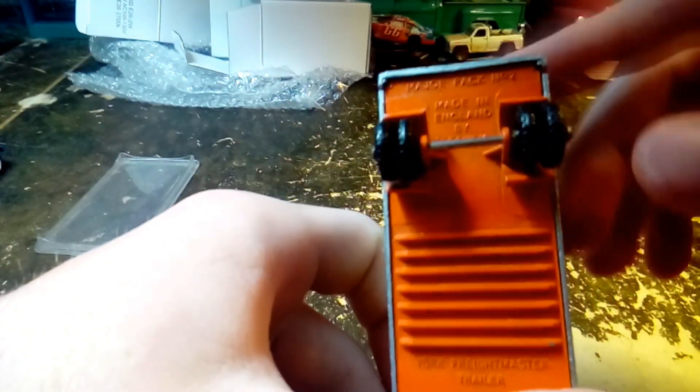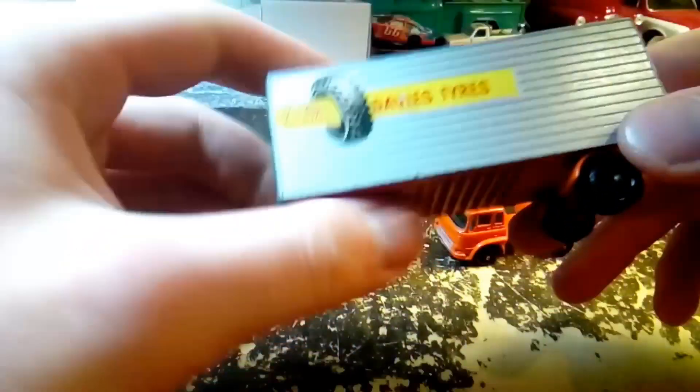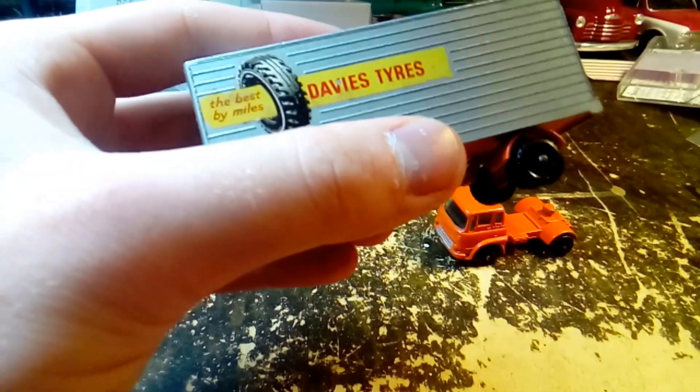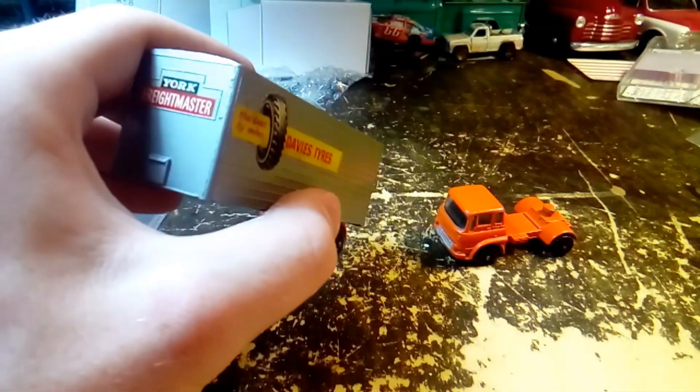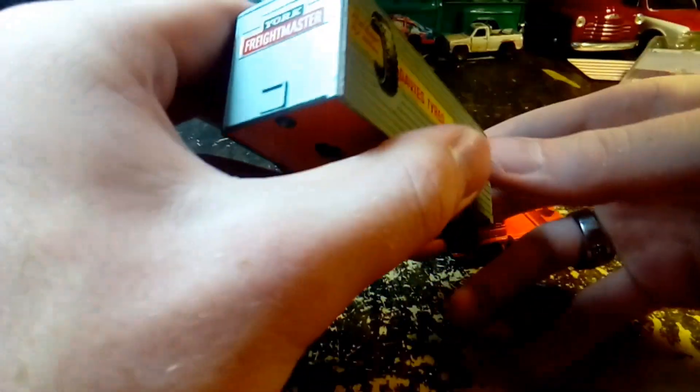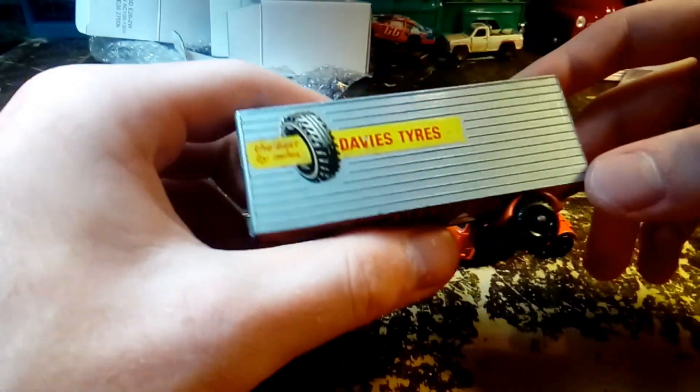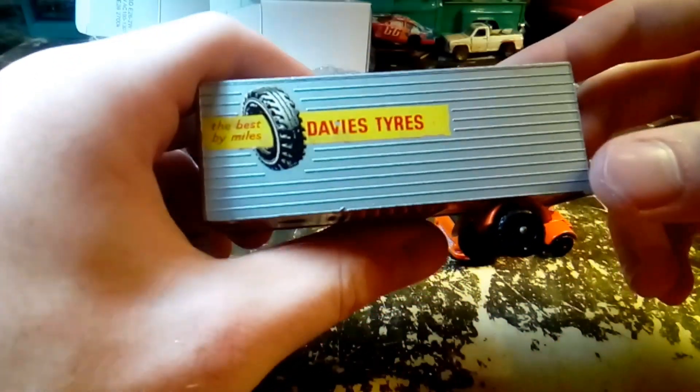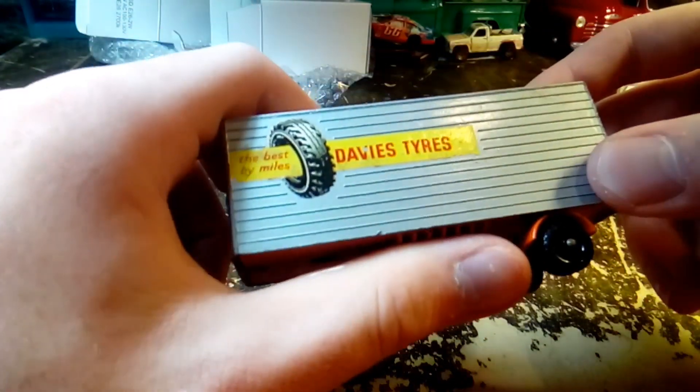But remember these Lesneys were made in England as you can see right there. And some words are spelled differently. It's kind of a regional thing. Depending on what country you're in they could be the same word, pronounced the same exact way, but with a different spelling. Kind of like favorites or colors. Words like that.